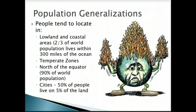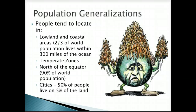When we look at population in general, the generalizations we can make are that populations focus near areas where there's water access, and we can also look at temperate zones — not in extreme heat and not in extreme cold. Looking at those latitude bands north and south of the equator where we see temperate climates, you're likely to see greater populations. As we move into the 21st century, an increasing number of people live in urban areas — 50% of people live in cities, and 50% of people live on only 5% of the land throughout the earth.